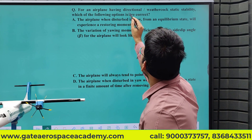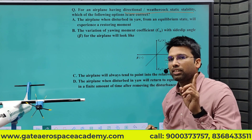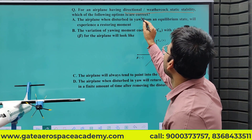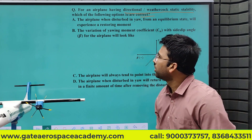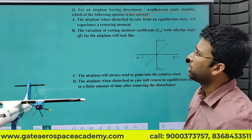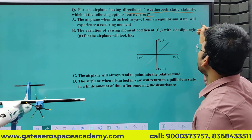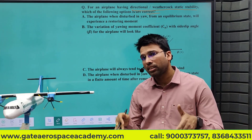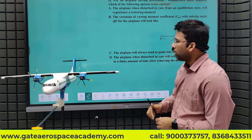The question is: for an airplane having directional and weathercock static stability, which of the following options are correct? It is an MSQ question — multiple options may be correct. The first option is: the airplane, when disturbed in yaw from an equilibrium state, will experience a restoring moment. That is the definition of static stability.